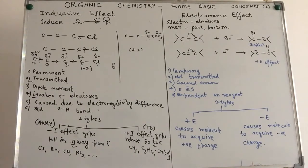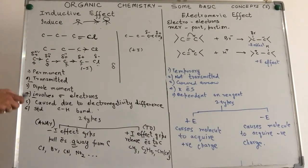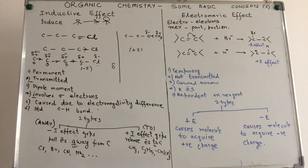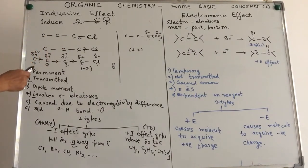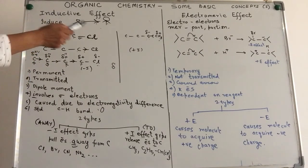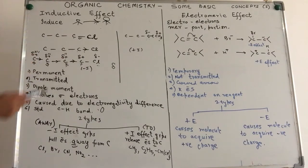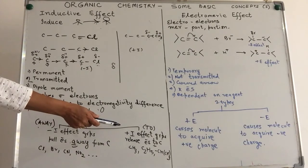How do we determine which atom is more electronegative and which will pull or give electrons? For that, we have chosen the carbon-hydrogen bond as the standard where we assume the inductive effect is zero. Accordingly, we have two types of groups — groups which can pull electrons, and groups which will give electrons towards the carbon. One is the take-away group and one is the give-to group.